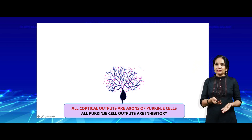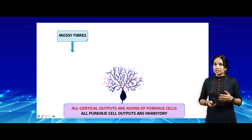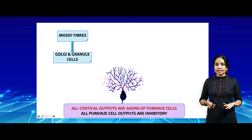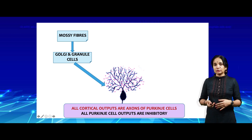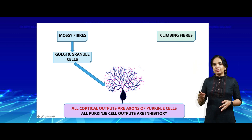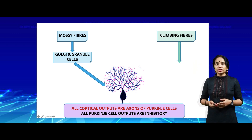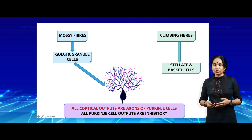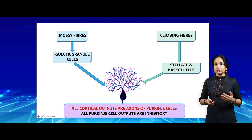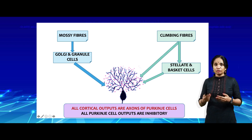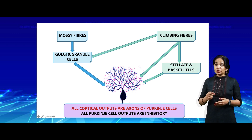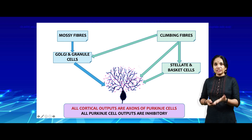The mossy fibers reach only till the granular layer where they form synapses with the Golgi and granule cells. These two cells send axons into the molecular layer which eventually synapse with the dendrites of the Purkinje cell. Climbing fibers follow three routes: they climb all the way to the molecular layer and synapse with stellate and basket cells, which send down their axons to contact the Purkinje cells; some climbing fibers can directly form synapses with the Purkinje cell; and lastly, on their way to the molecular layer, climbing fibers send collaterals through the granular layer which stimulate Golgi and granule cells, which in turn stimulate the Purkinje cells.